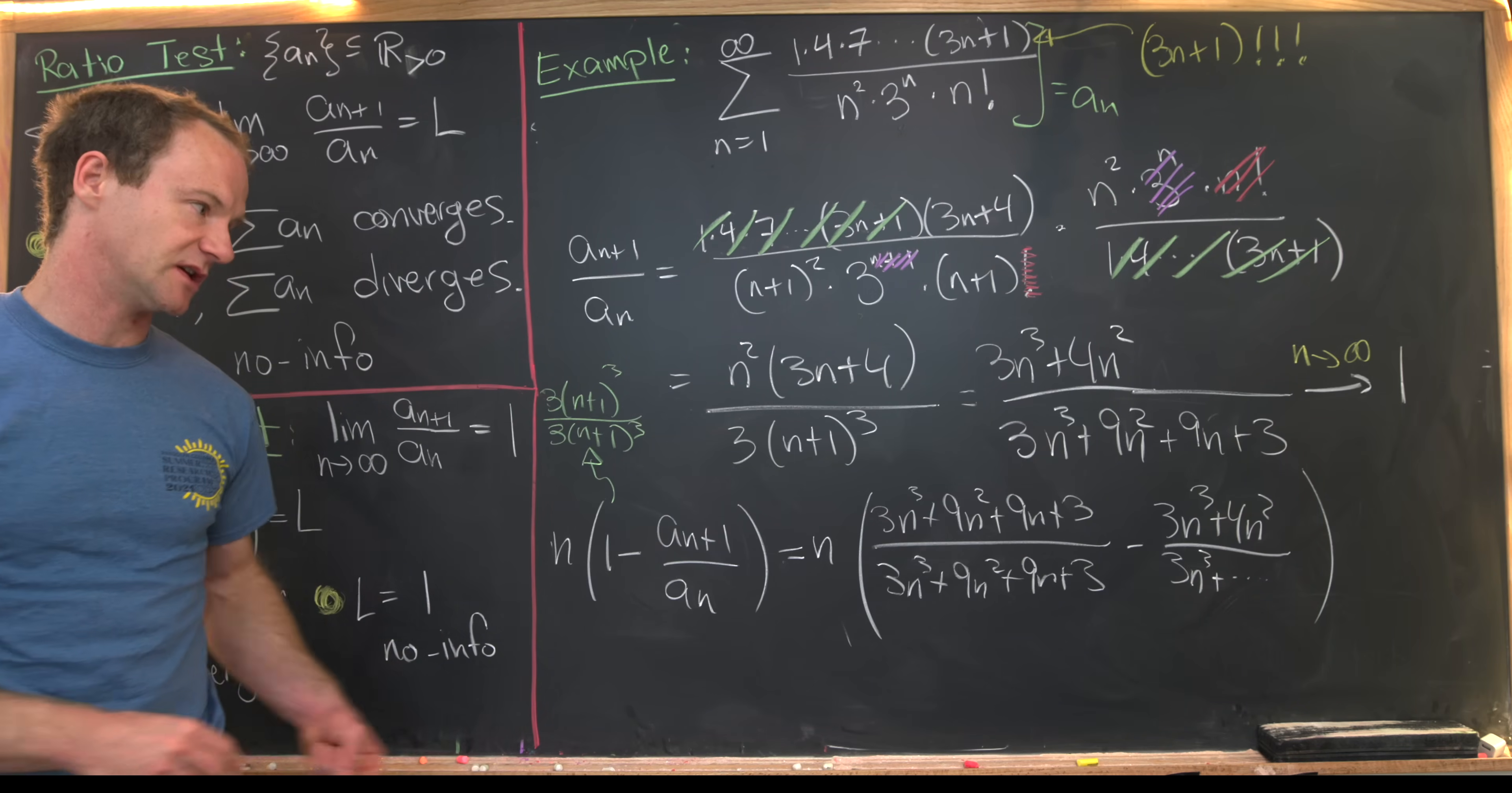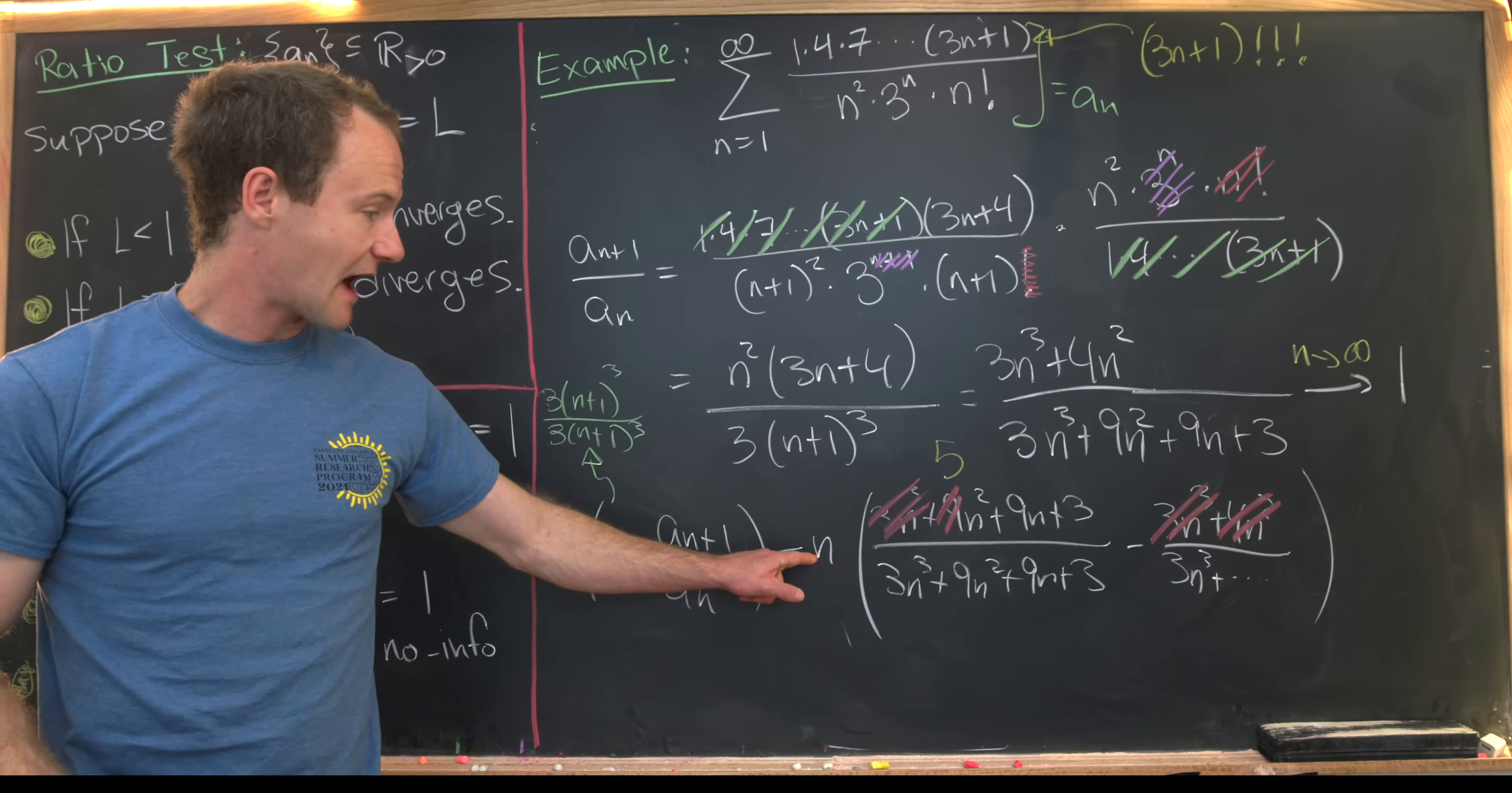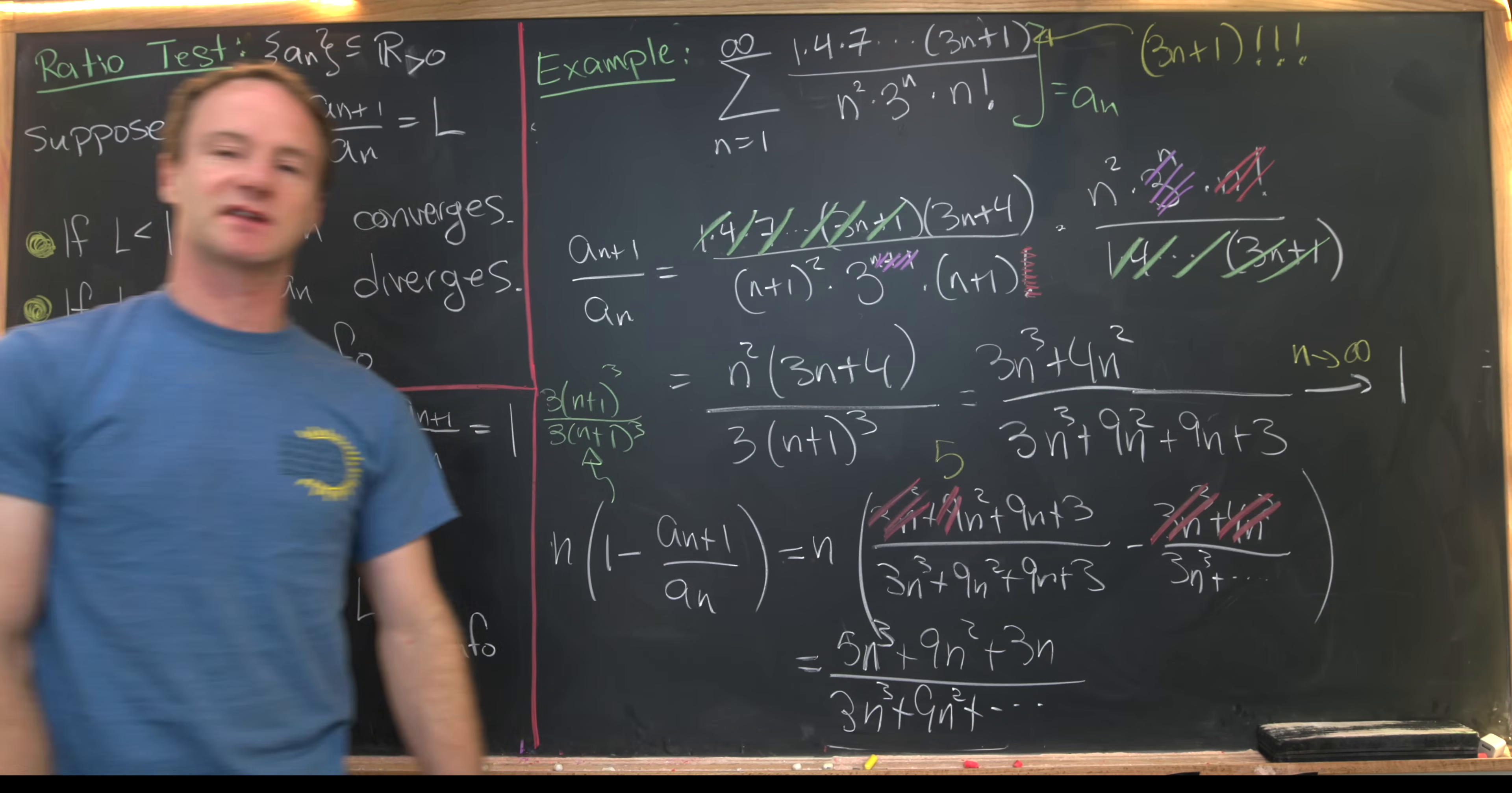Now let's see what simplification can be had. This 3n³ will cancel this 3n³, and then this 4n² will cancel this 9n² down to a 5n². And then after multiplying this n through, we're left with (5n³+9n²+3n) over this denominator. So we've got 3n³+9n²+9n+3, those last couple of terms.